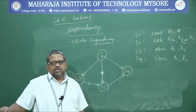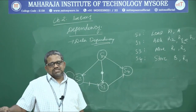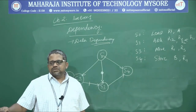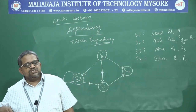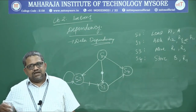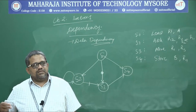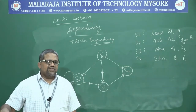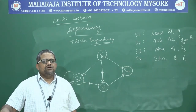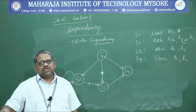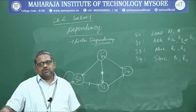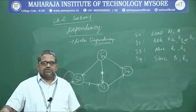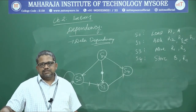So we have defined five types of dependencies: flow dependency, anti-dependency, output dependency, I/O dependency, and unknown dependency. We drew a dependency graph for a code segment with four instructions S1, S2, S3, and S4. In the next class, we will take one more example, draw the dependency graph, and look into ways to exploit parallelism. Thank you for your patience in listening.